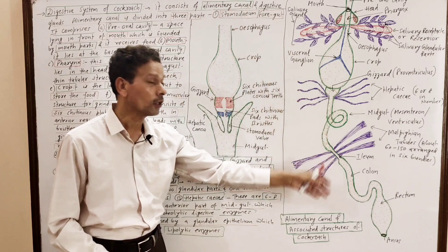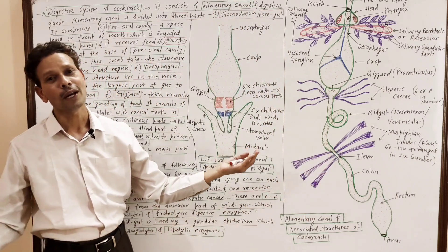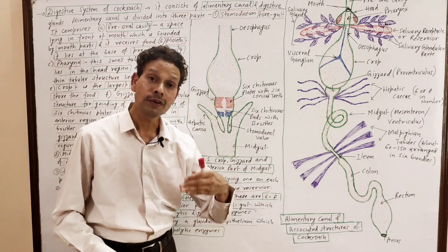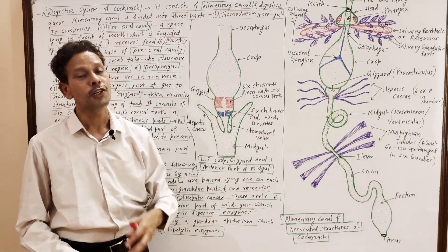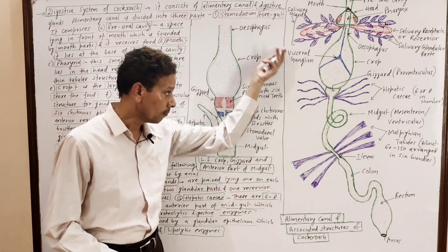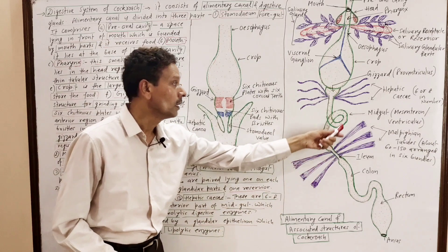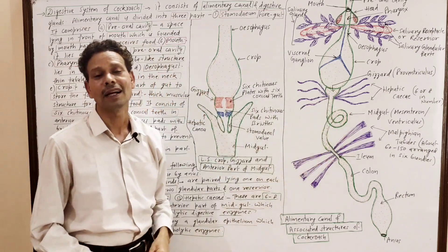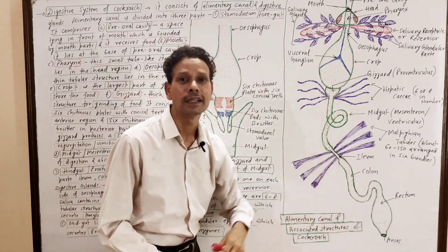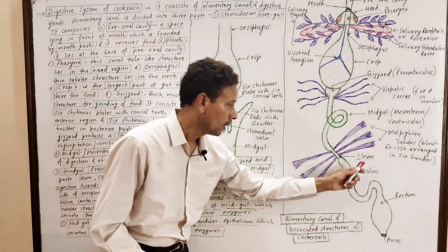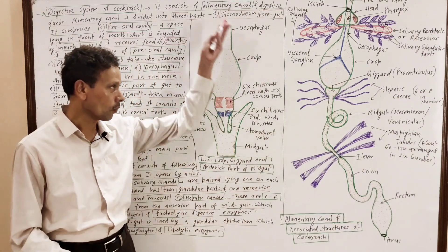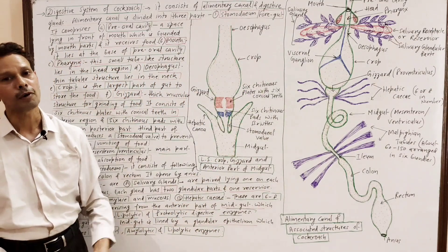The cockroach is omnivorous. It also consumes its young ones and members of its own species — it shows cannibalism. Main digestion and absorption of food take place in the midgut. The hindgut (rectum) temporarily stores fecal matter, and the rectum opens via the anus. This is all about the digestive system of cockroach.